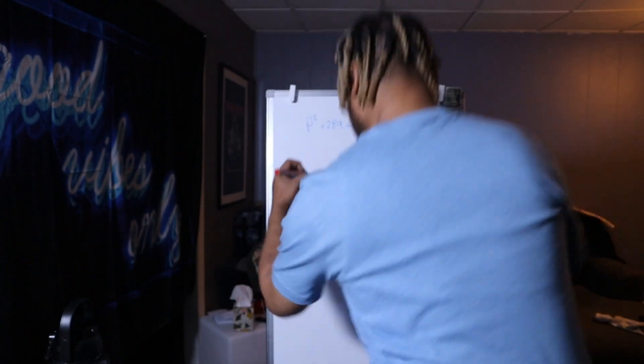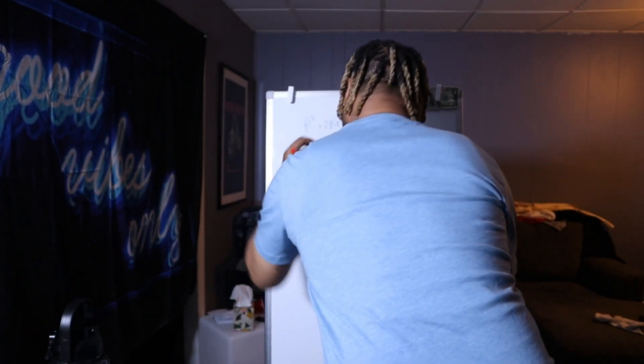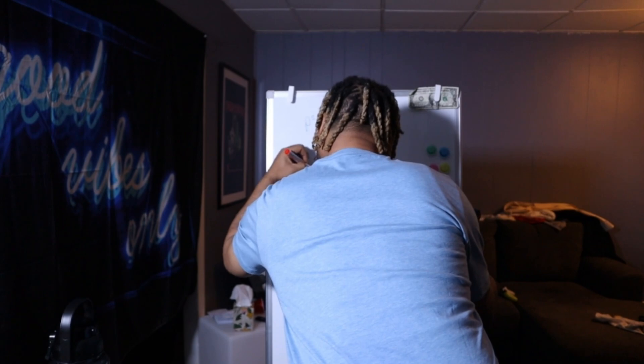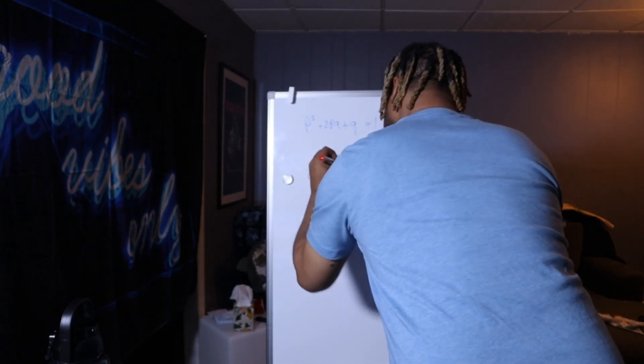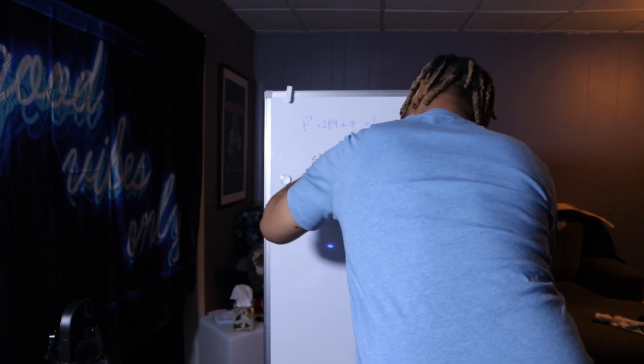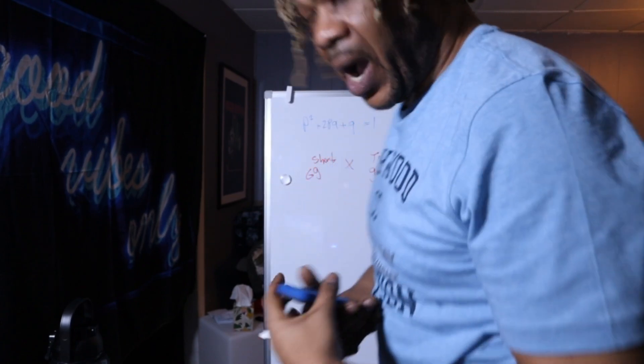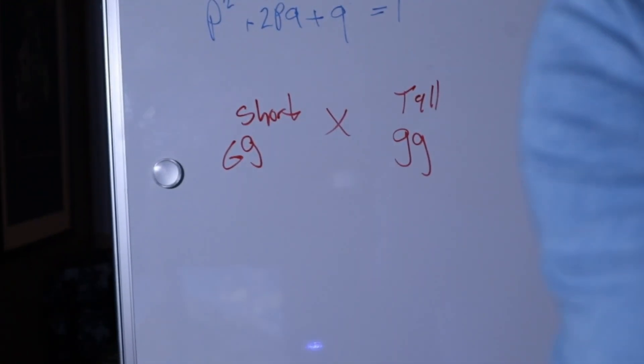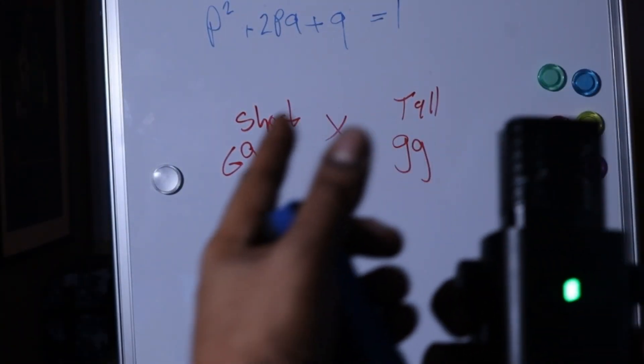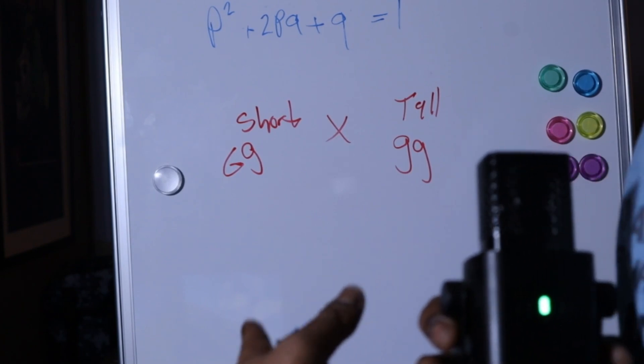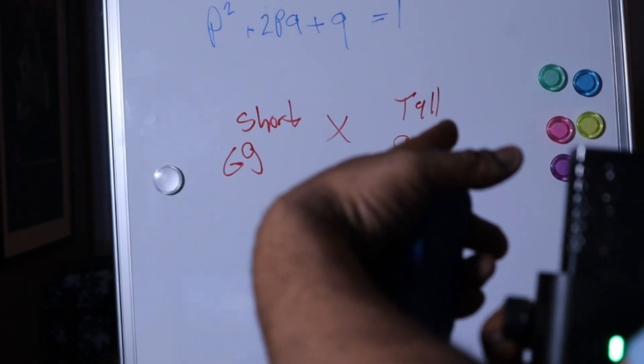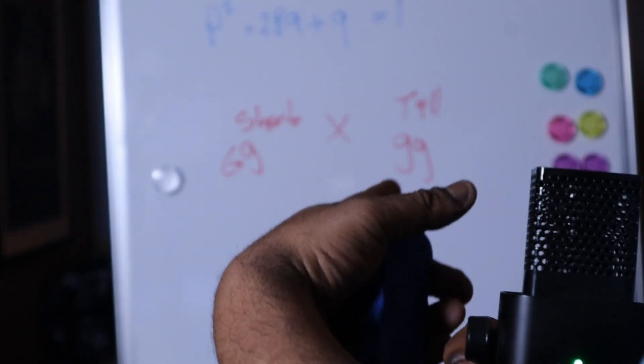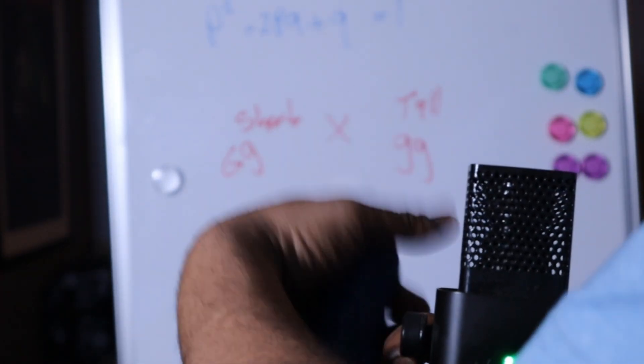We're going to use a short and a tall gorilla, right? Let's say short was big G, little g, times tall, which is little g, little g. Alright, cool. So let me zoom in for y'all. Alright, we got the short gorilla, which is heterozygous, big G, little g. And then we got a tall gorilla, which is homozygous, recessive, little g, little g. So,